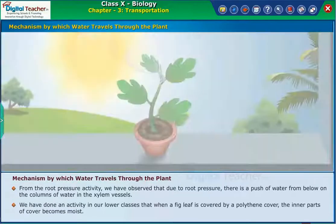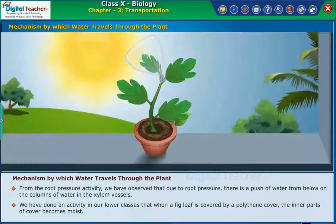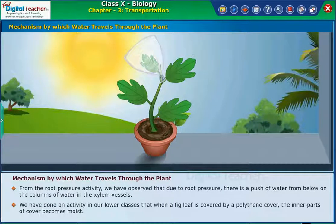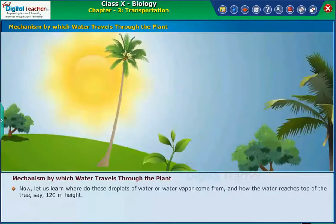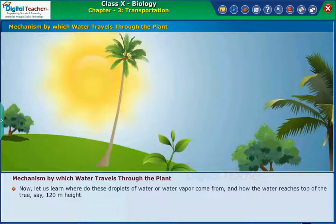We have done an activity in our lower classes where when a fig leaf is covered by a polythene cover, the inner parts of the cover become moist. Now, let us learn where these droplets of water or water vapor come from, and how the water reaches the top of a tree — say 120 meters in height.